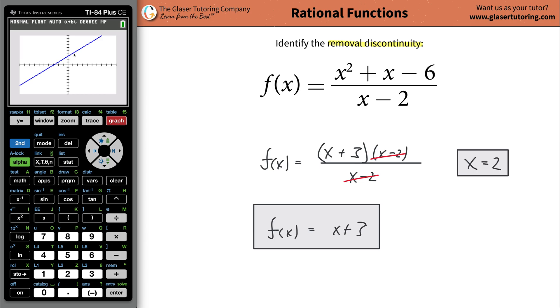So what you want to do if you want to identify that exact point now, what you can do is you can take 2, plug it into this for x. 2 plus 3. And that's going to be equal to 5. So basically, the point discontinuity now exists at 2, 5.